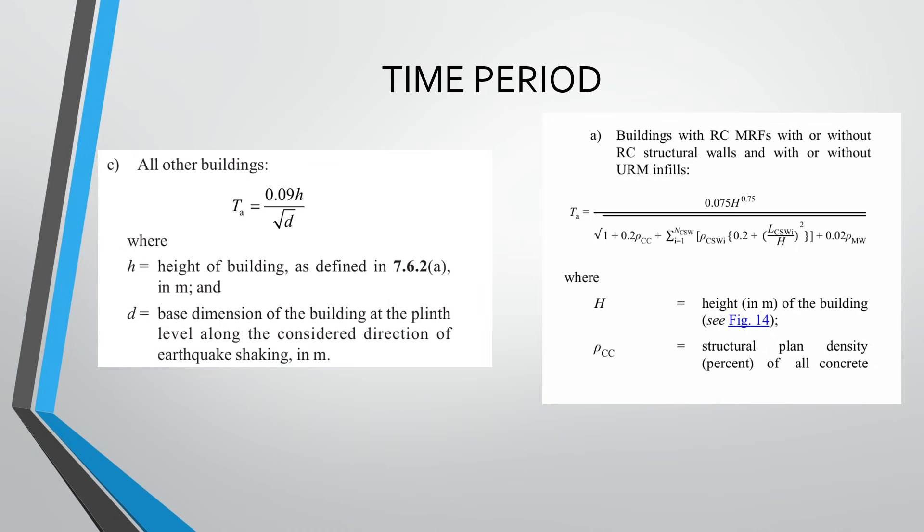Then the next important thing is the time period. So as you can see here, this is the 2016 time period formula, and this is the 2025 time period formula for RC moment frame with infill. So in 2016, it was 0.09 H upon root D, where H is the height of the structure and D is the base dimension.